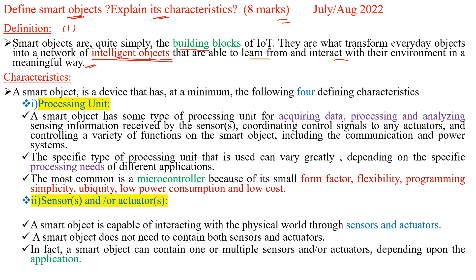The next section covers the characteristics. A smart object consists of totally four characteristics. A smart object is a device that has at minimum the following four defining characteristics.